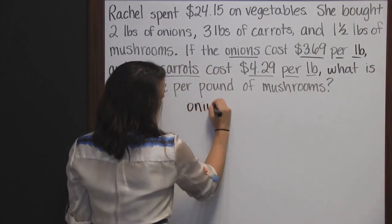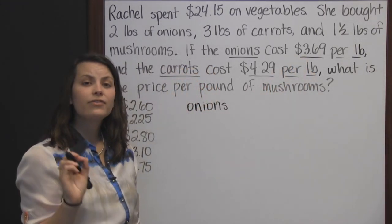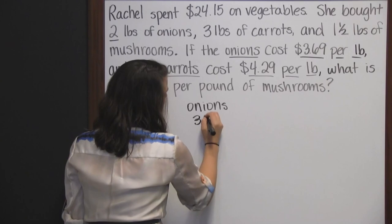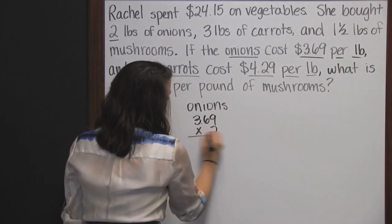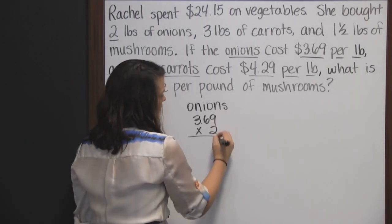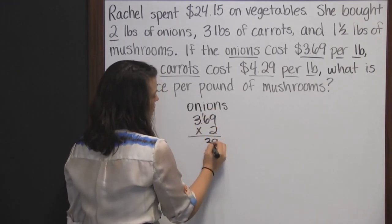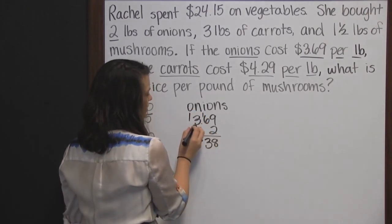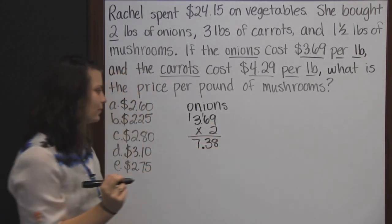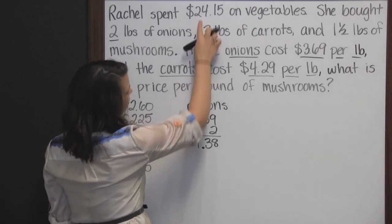Let's start with the onions. Those onions cost three dollars and sixty-nine cents for every pound purchased, and she purchased two pounds. So we need to multiply 3.69 times 2 to find the total amount spent on onions. Two times nine is eighteen, carry the one. Two times six is twelve, plus one is thirteen — write the three, carry the one. Two times three is six, plus one is seven. Two numbers behind the decimal, so she spent seven dollars and thirty-eight cents on onions.